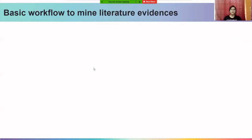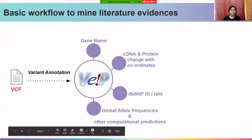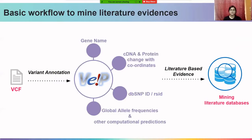The basic workflow to mine literature evidences starts with the VCF file, which can be annotated with the help of VEP — an online tool we learnt about in the previous lecture. VEP helps us retrieve the gene name, the cDNA change, the protein change and position, and the dbSNP RSID. It also provides global allele frequencies and other computational predictions, which can then be used to mine literature-based evidence.